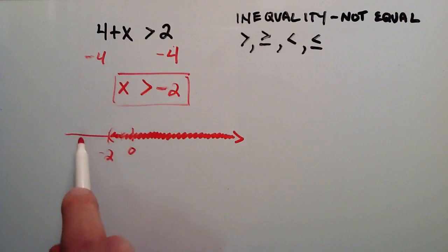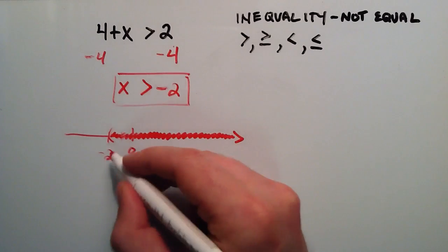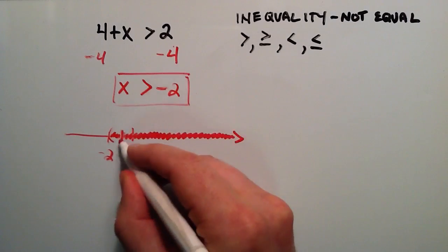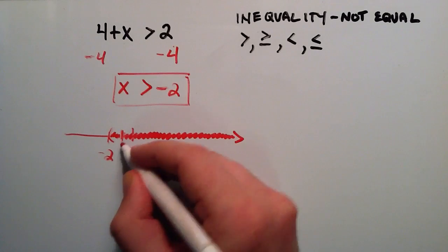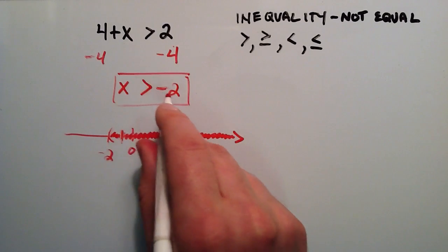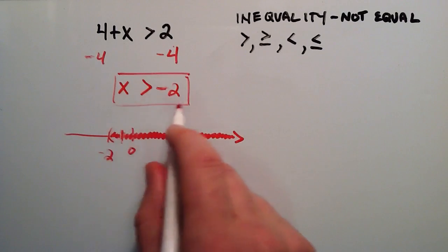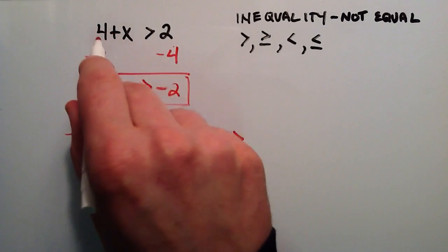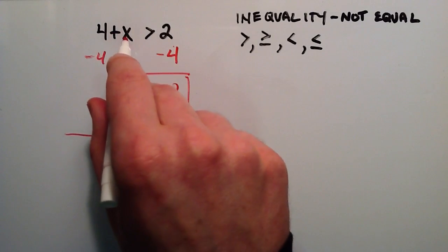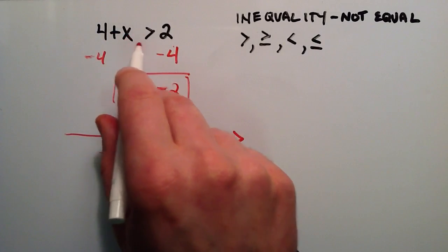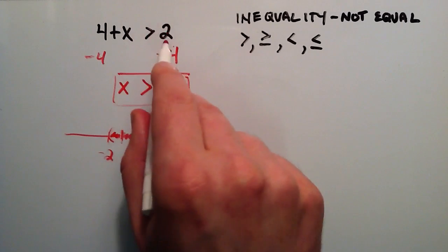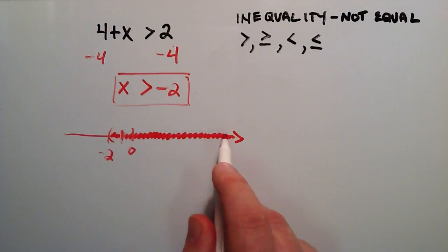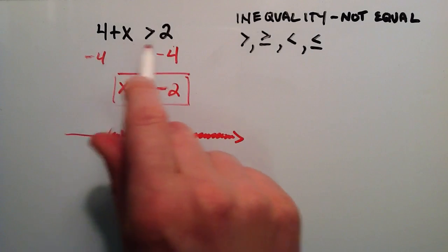Let's go ahead and show you what I mean by that. If we were to grab a number in our set, let's say negative 1 — negative 1 is greater than negative 2, so it satisfies our set. If we were to plug negative 1 where x is, 4 plus negative 1 gives us positive 3, and positive 3 is greater than 2. So we chose a random number that is in this set and showed that it satisfied this condition.